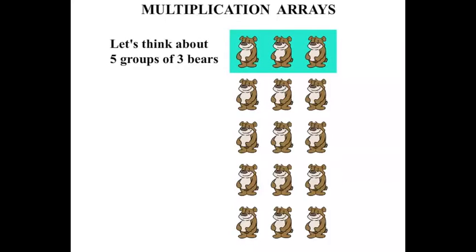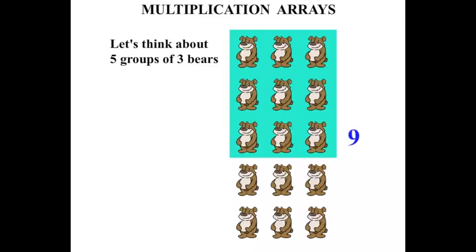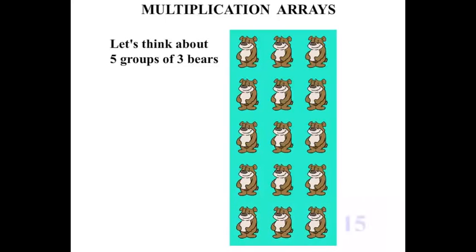Now let's count them all together. We have three so far. Another three makes six. Another three makes nine. Another three makes twelve. Another three makes fifteen. So five groups of three bears total fifteen bears.